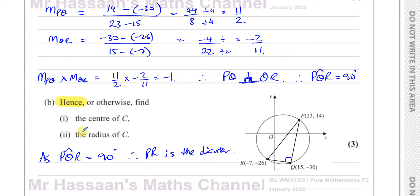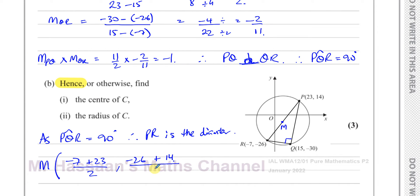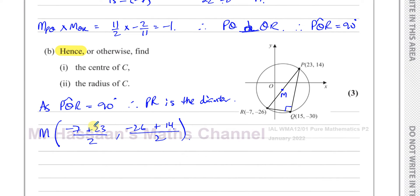The center of a circle is the midpoint of the diameter. Let's call this point M. The midpoint of diameter PR — which is the center of the circle — is the average of the x-coordinates: negative 7 plus 23, divided by 2; and the average of the y-coordinates: negative 26 plus 14, divided by 2. So we get 16 divided by 2 equals 8, and negative 12 divided by 2 equals negative 6. Therefore the center is (8, −6).